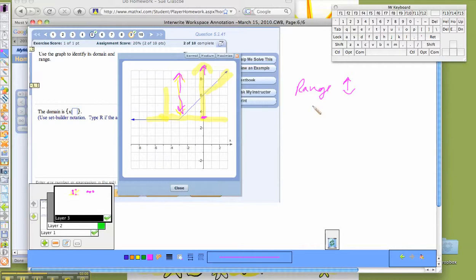Again, the lowest it goes is 3 and it goes up forever. But they want this to be in set builder notation. So therefore I need to use the letter Y and say what kind of values Y can be. Y is bigger than or equal to 3 at all times.